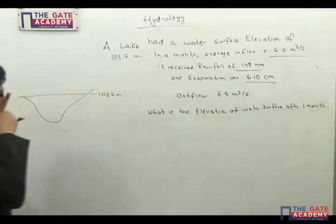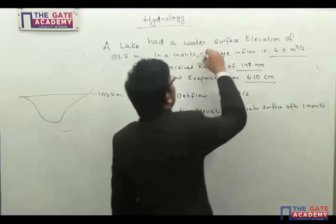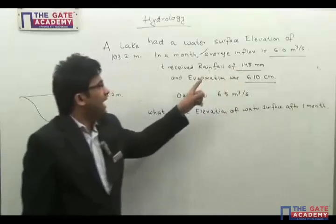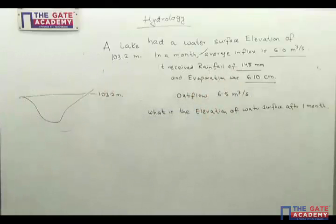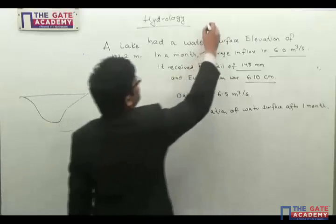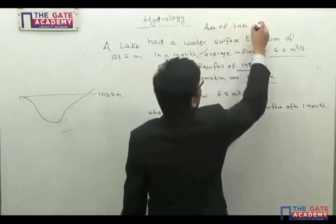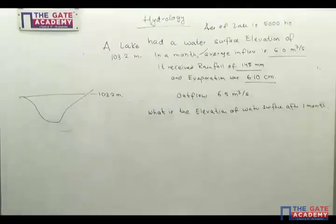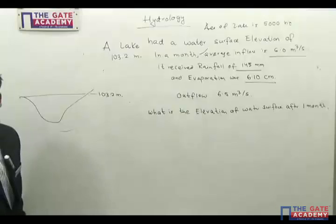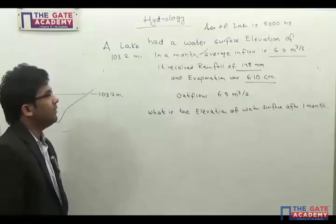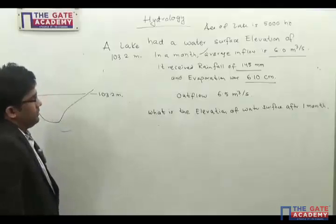The question asks for the elevation of the water surface after one month. The average inflow in that month is given, the average outflow is given, the rainfall received is given, and evaporation is given. The area of the lake is also given as 5000 hectares. So these are all the data given to us in the problem.